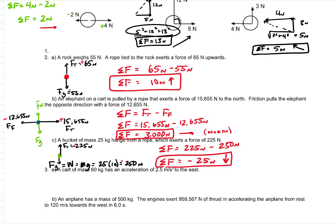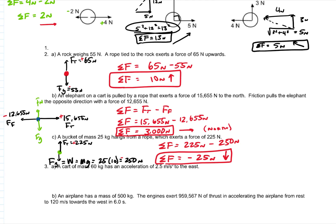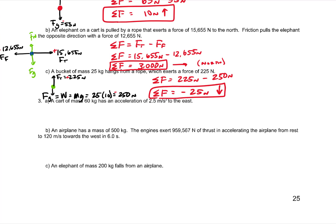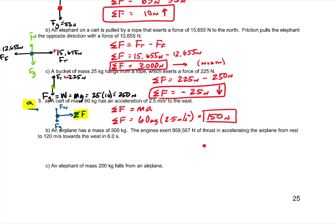Number three is a little different. We're not given enough force information, so we'll use Newton's second law to find the net force. For part A, we have a cart with weight and normal force, and the net force is to the right. Net force equals mass times acceleration: 60 kilograms times 2.5 meters per second squared gives a net force of 150 newtons.